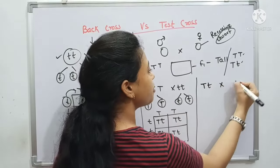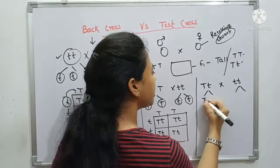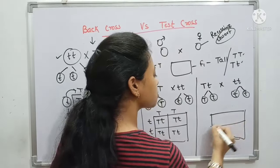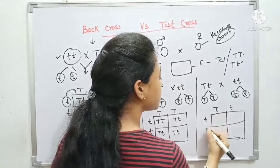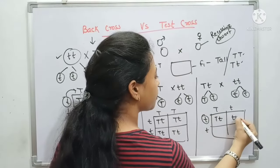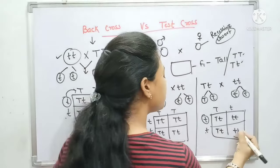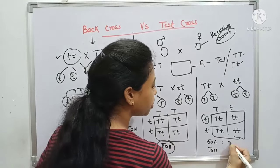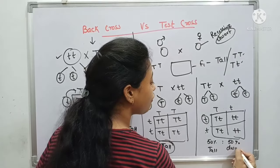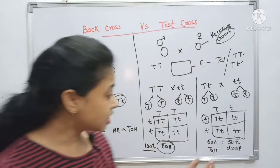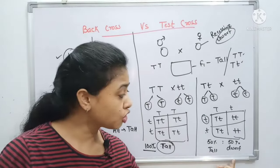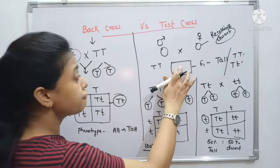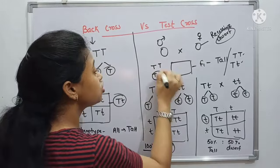Now suppose I take the other condition: I cross a heterozygous F1 with the recessive trait. We make a Punnett square — capital T and small t gametes. What do I get? 50% of plants are tall and 50% are dwarf. So if I get a result of 50% tall and 50% dwarf, it suggests that the F1 genotype is heterozygous dominant.